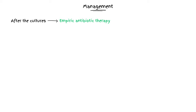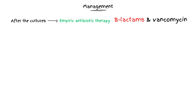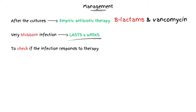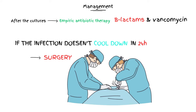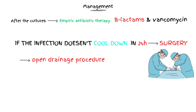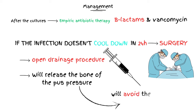After the cultures, we will need an empiric antibiotic therapy, such as beta-lactams and vancomycin, which have a large spectrum of action. This bone infection is a very stubborn one, so the antibiotic treatment will last longer — around six weeks. To check if the infection responds to therapy, we can evaluate the ESR level. However, if the signs of systemic infection do not come down within 24 hours, surgery will be needed. An open drainage procedure is the gold standard — this will release the bone of the pus pressure and will avoid bone erosion.